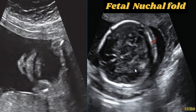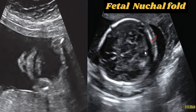Now we are going to discuss the nuchal fold measurement. This is an axial image of the fetal head at 18 weeks and 4 days, showing the cavum septum pellucidum, thalami, and hypoechoic cerebellar hemispheres. The nuchal fold is measured from the outer margin of the occipital bone to the outer margin of the fetal head surface. It measures about 0.35 cm, which is normal — the upper limit is about 0.6 cm.